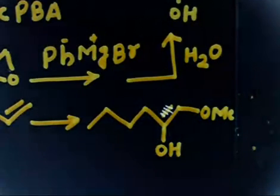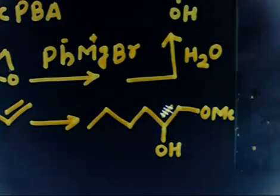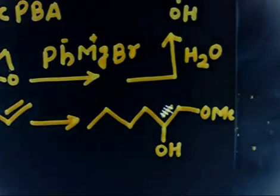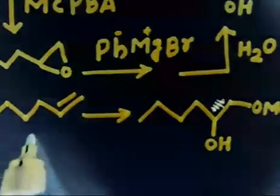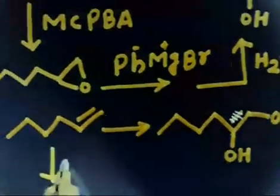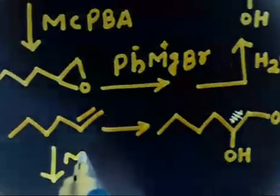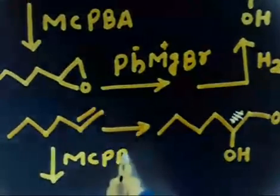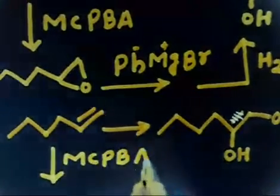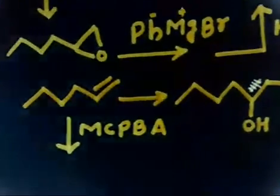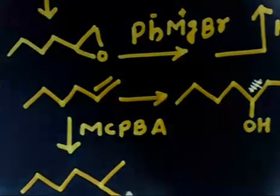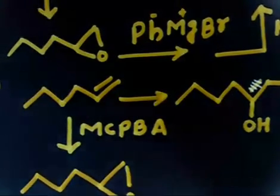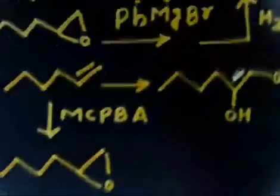How will you prepare this compound? Once again you can take the help of epoxide ring formation. Treat first with MCPBA — meta-chloroperoxybenzoic acid. Treating with MCPBA gives you the epoxide.